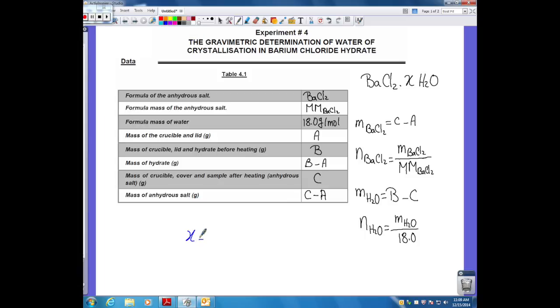X is equal to number of moles of water divided by number of moles of the anhydrous. This way you can find the value of X.